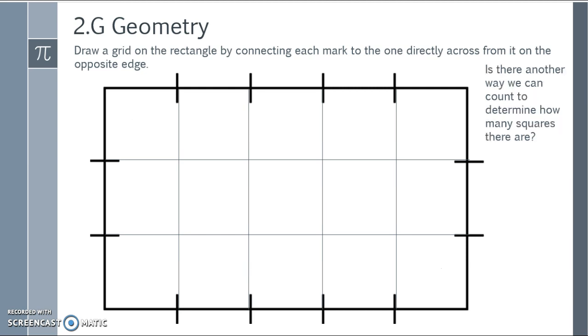Is there another way we can count to determine how many squares there are? Well, instead of going by rows, perhaps we can go by columns. So we can count by 3: 3, 6, 9, 12, 15. Special note that at this age, students aren't required to know how to count by 3s, but it's a good opportunity to show that that pattern does exist.